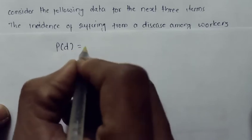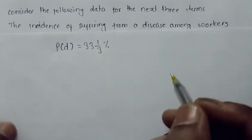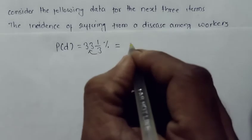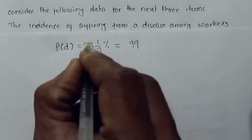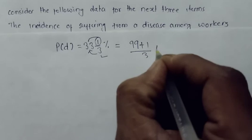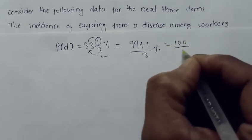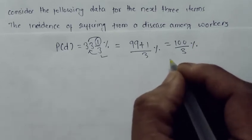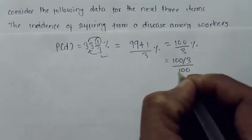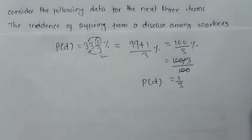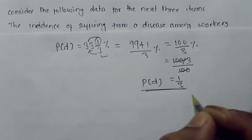The probability of suffering from a disease is given as 33⅓ percent. First, I need to convert this into a normal probability. Multiply 3 by 33 to get 99, then add 1, giving 100 divided by 3 percent. Removing the percentage by dividing by 100 gives 1/3. So the probability of an employee suffering from a disease is 1/3.